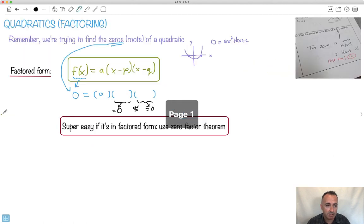So parabolas, lots of places, but the key to solving them and to doing the zeros in this case for factorizing is finding it in factorized form, use a zero factor theorem, boom.